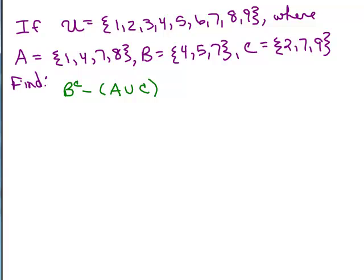Here's the first problem. Find B complement minus A union C. Now remember this is not regular subtraction, this is the difference operation. It's the difference of two sets, a little bit different.